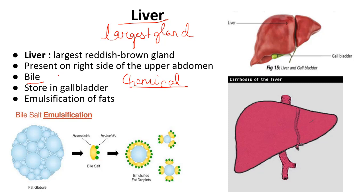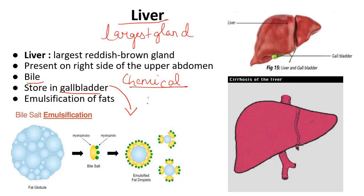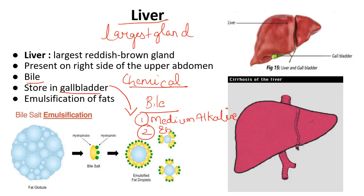However, liver cannot send bile directly into the small intestine. It first gets stored in the gallbladder, and then whenever required, the gallbladder secretes it into the small intestine. The chemical juice secreted by liver is bile, which first enters the gallbladder and then goes to the small intestine. In the small intestine, bile has two functions: first, making the medium alkaline, and second, emulsification of fat.